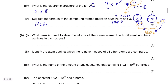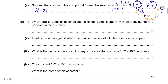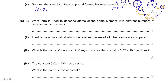Part b. What term is used to describe atoms of the same element with different numbers of particles in the nucleus? Different numbers of particles in the nucleus — specifically the number of neutrons — can be found in isotopes.